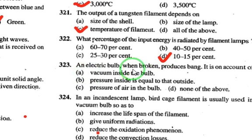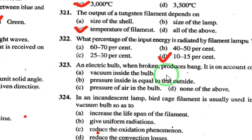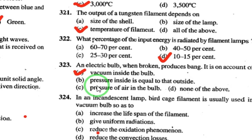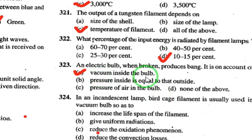An electric bulb produces a bang when broken due to the vacuum inside the bulb. When broken, outside air rushes in to occupy the vacuum space, causing the loud sound. So the answer is vacuum inside the bulb.